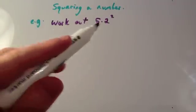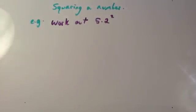We've been asked to work out 5.2 squared. So you could do 5.2 times 5.2, and you could use the multiplying decimals video to help you remember how to multiply two decimals together.